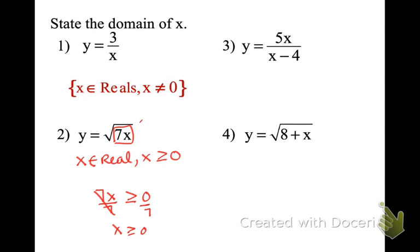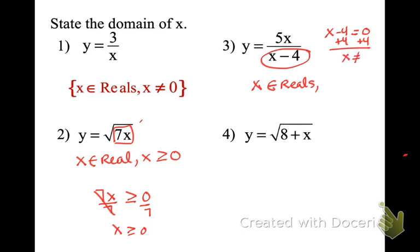In the next one, it's not that x can't equal 0 — it's that the whole denominator cannot equal 0, because that's the fraction rule. So we say x is an element of the reals except I have to set x minus 4 equal to 0. What would make that equal 0? I add 4, so x cannot equal 4.